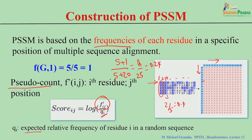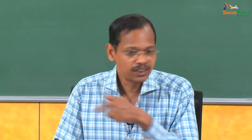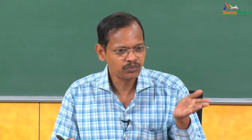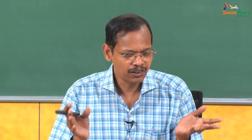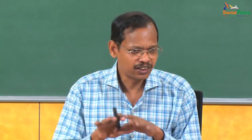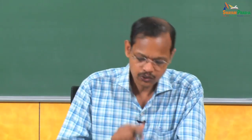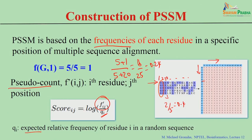Q is the expected frequency of residue i at a particular position in a random sequence. Not all residues are randomly distributed in amino acid sequences. If they were uniformly distributed, each residue would have probability 0.05, but that is not the case. For example, leucine and valine are highly dominant while cysteine is less frequent. So you divide by Qi and take the logarithm to get the score.